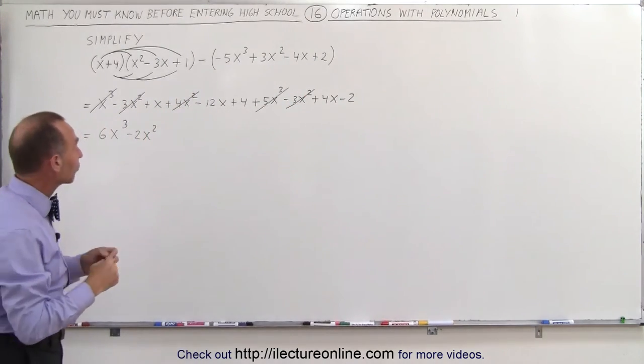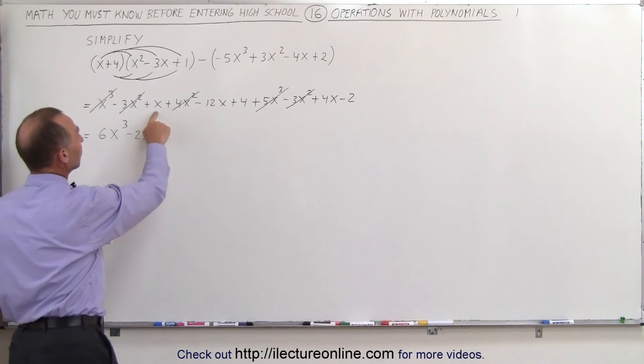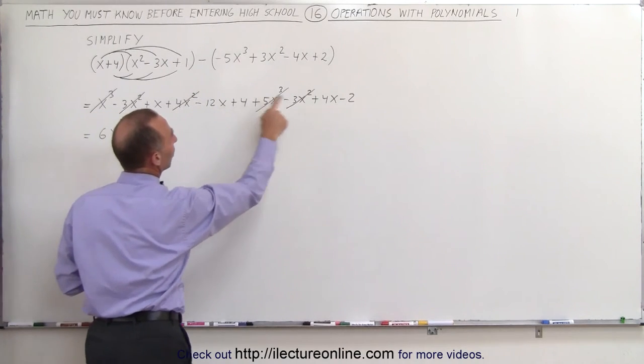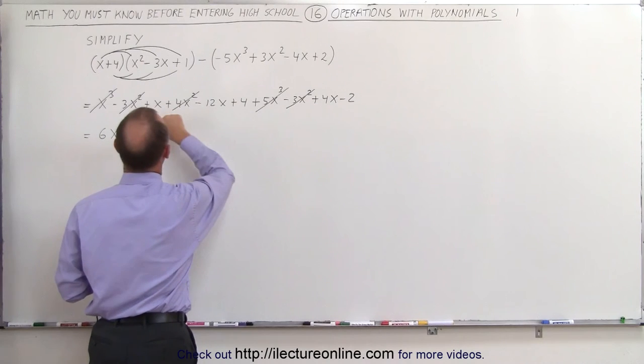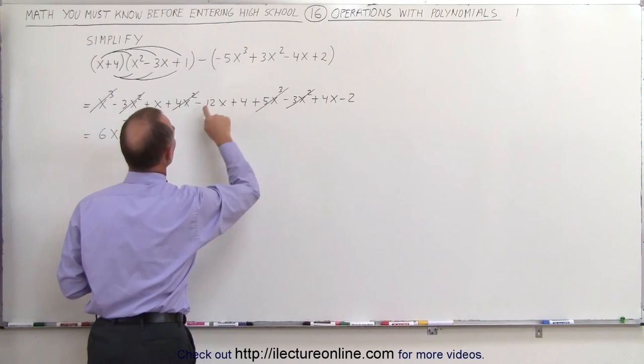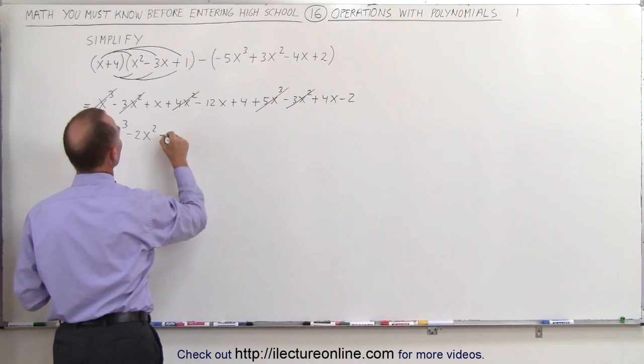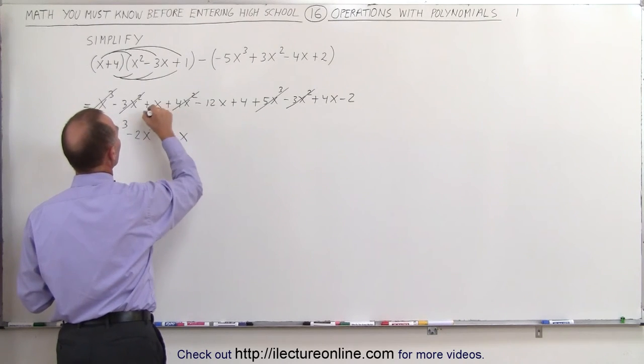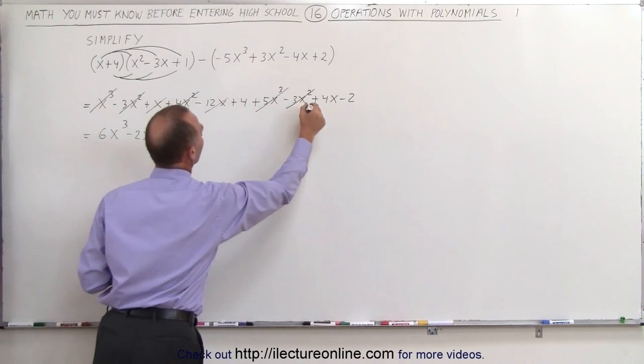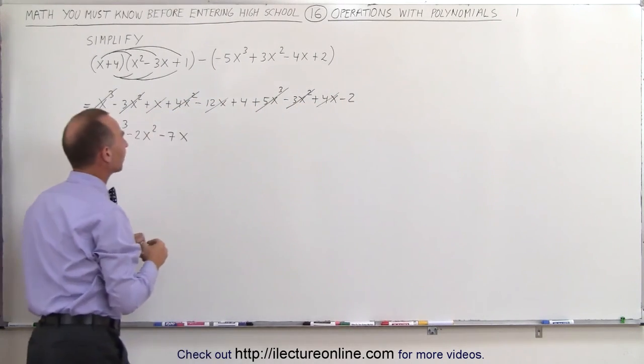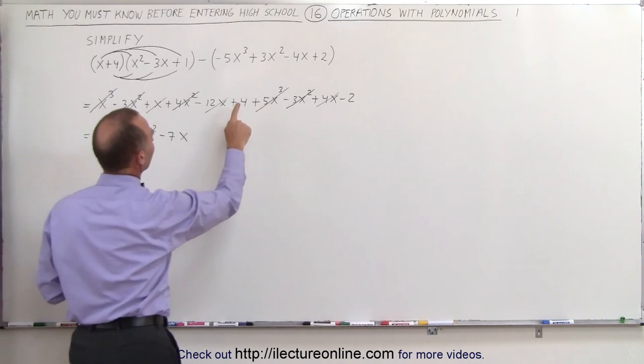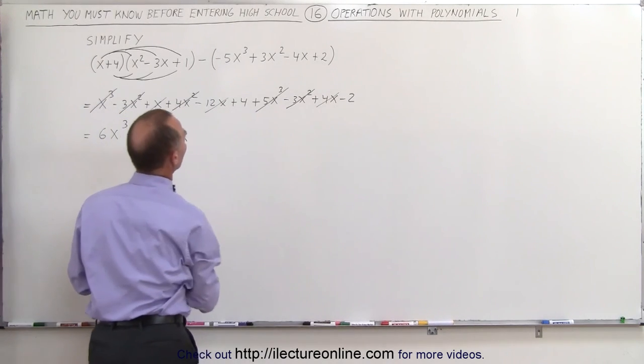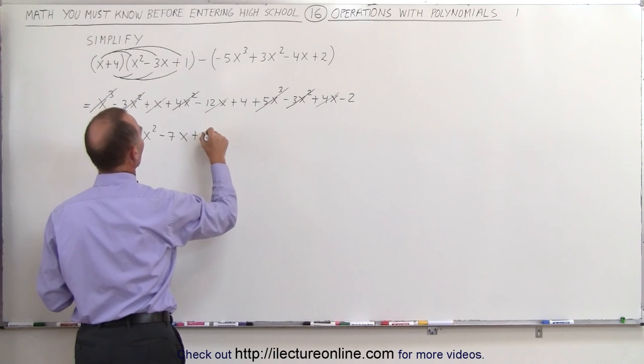Now we look for all the terms that have x to the first power. Plus x minus 12x plus 4x. So 1 plus 4 is 5, subtract 12 gives us minus 7x. Again, we can cross out all the x to the first terms, and all we have left is numbers. So here we have a plus 4 and a minus 2. 4 minus 2 gives us plus 2.